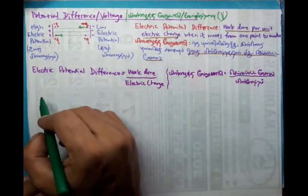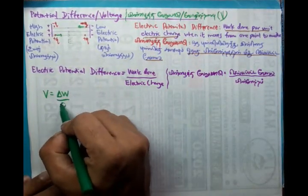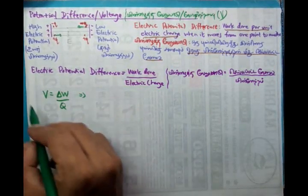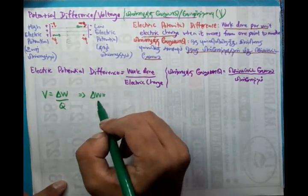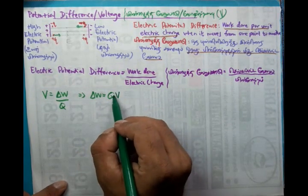Potential difference we have used the term V. So V is equal to work done, let's put delta W, over charge, let's put Q. This is the definition. If you want to rearrange it, you can say work done equal to QV, electric potential difference multiplied by charge.